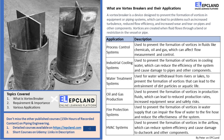A vortex breaker is a device commonly used in industrial and commercial applications to prevent the formation of vortices in equipment or piping systems. Vortices can cause problems such as reduced flow efficiency, increased turbulence, and wear and tear on components. Vortex breakers are typically small, cylindrical, triangular, or cross-shaped devices installed in a pipe or vessel where a vortex is likely to form. They create a disturbance in the fluid flow that breaks up the vortex before it can form, thus preventing the problems caused by vortices.